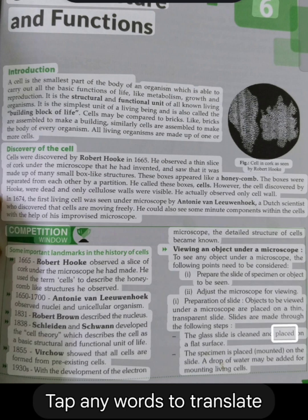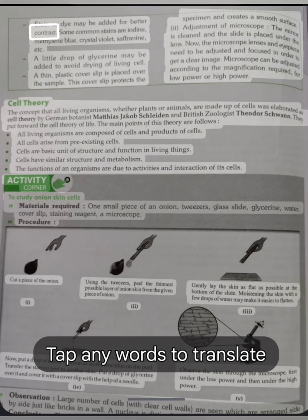The glass slide is cleaned and placed on a flat surface. The specimen is placed, mounted, on the slide. A drop of water may be added for mounting living cells. Stain or dye may be added for better contrast. Some common stains are iodine, methylene blue, crystal violet, safranine, etc. A little drop of glycerin may be added to avoid drying of living cells. A thin plastic cover slip is placed over the sample. This cover slip protects the specimen and creates a smooth surface.